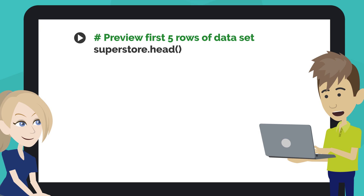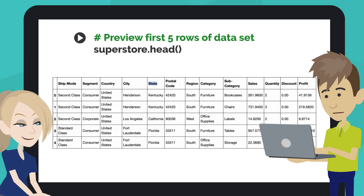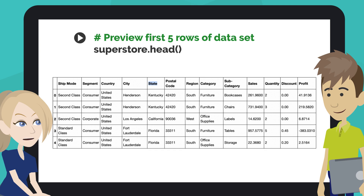Once you're done, either click on the play button or hit Shift + Enter. We can see the first five rows of the dataset now. It's very important that you see this output in your notebook.